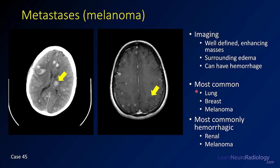The most common parenchymal metastases are from lung, breast cancer, and melanoma. The most common hemorrhagic metastases are from renal cell carcinoma and melanoma. These are not septic emboli because they're too round and too enhancing, and not cysticercosis because there's no cystic component. Metastatic disease is the best choice here.